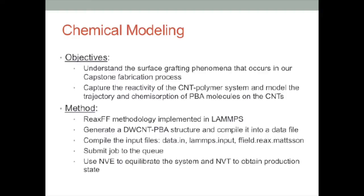To run the simulations, we first had to generate our double-walled carbon nanotube structure with PBA molecules. We used a nanotube builder to generate the double-walled CNT and uploaded the structure in the Gauss view to terminate the CNT with hydrogens and satisfy valency. This acted as our periodic boundary condition since it was very difficult to match up the CNT's structure perfectly. We then compiled the CNT and polymer molecules into a data file. To run the simulation and submit the job to the queue, we also needed a LAMMPS and a ReaxFF input file. The NVE ensemble was used to equilibrate our system and the NVT was used to obtain the production state and preserve the trajectory of our PBA molecules.